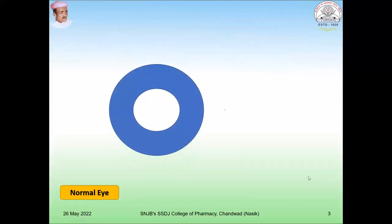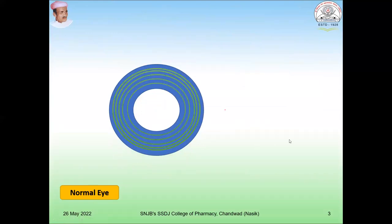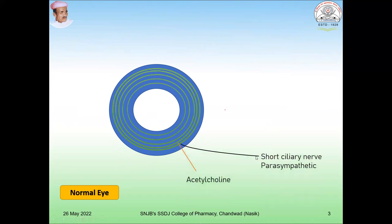This is the normal eye with a normal pupil size. If you observe, there are circular muscles also called the short ciliary nerve, and they are innervated with the parasympathetic nervous system. As you know, the neurotransmitter of the parasympathetic nervous system is acetylcholine, which is released at that site. It also contains the sphincter pupillae, which is responsible for constriction and relaxation of the pupil.